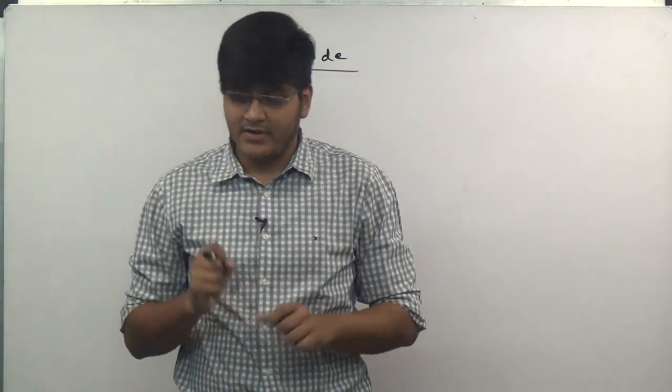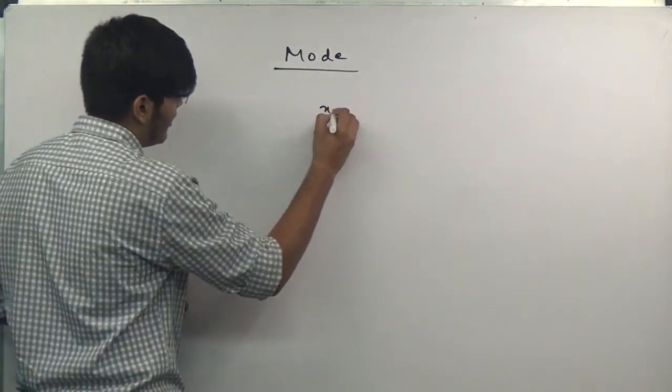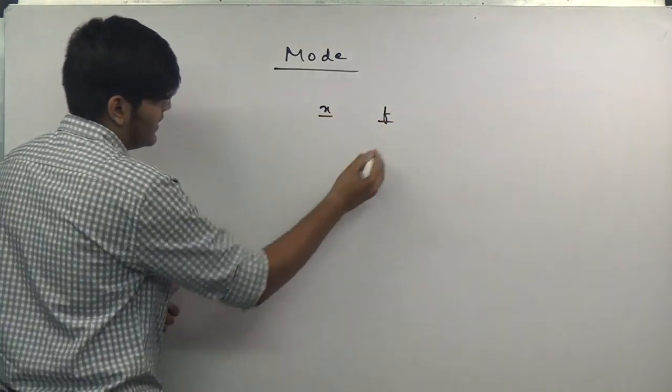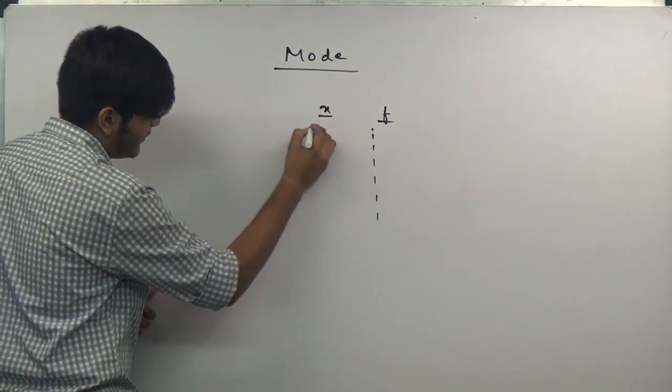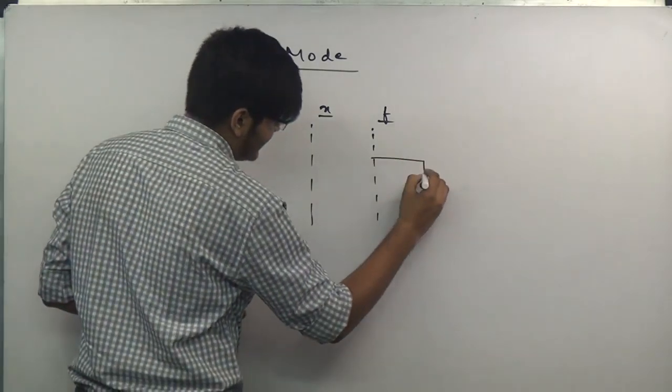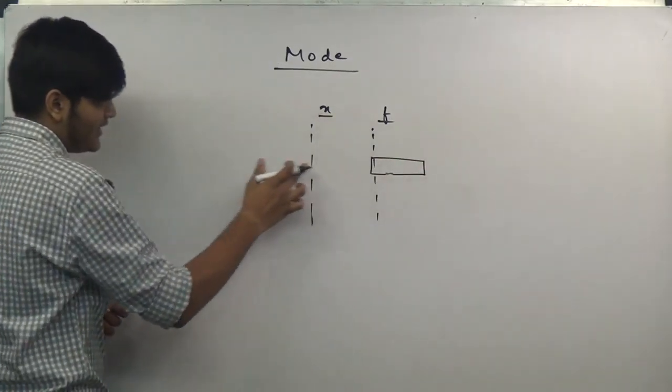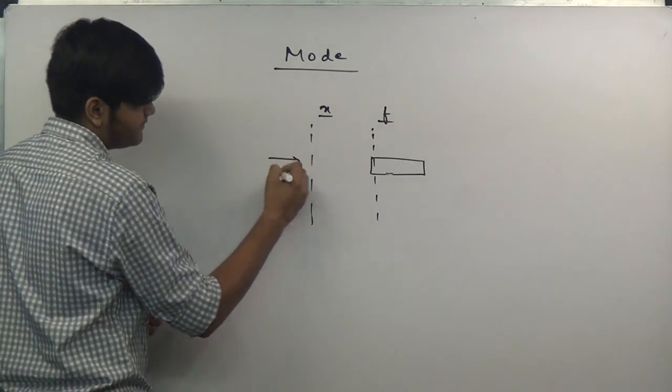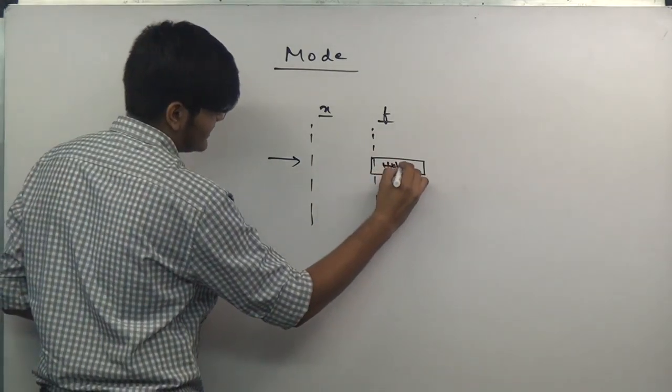For example, the highest frequency. Whenever we are talking about two columns x and f, there are different frequencies for different classes. The highest frequency concerning the particular class will become mode.